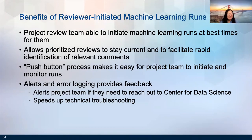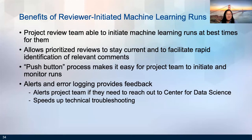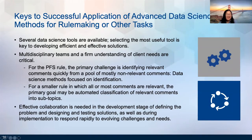There are several benefits to this new process. It allows the project review team to initiate machine learning runs when it works best for them — they are most aware of when new comments have been posted and can fit the runs into their workflow. With a click of a button, they can kick off the automated data pipeline and monitor the progress of the machine learning run. Alerts and error logging allow project team members to know if there's an issue to bring to the Center for Data Science, also speeding up technical troubleshooting. This puts the power of the advanced data science pipeline in the hands of the end users.